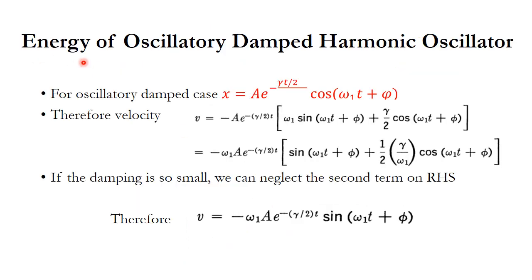Now, what is the energy of the Damped Harmonic Oscillator? We discuss the simplest case: the energy of the oscillatory damped harmonic oscillator. For the oscillatory damped case, the solution is x equals a times e to the power (minus gamma*t/2) times cos(omega_1*t plus phi). The velocity is found by differentiating with respect to time; since there are two time-dependent functions, we differentiate with respect to e to the power (minus gamma*t/2) and then with respect to cos(omega_1*t plus phi), giving two terms.